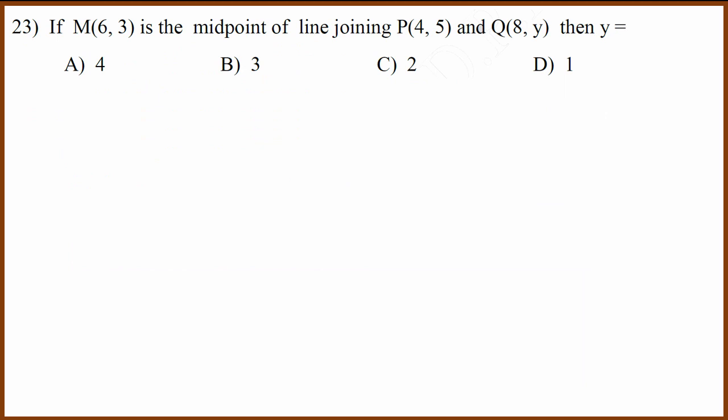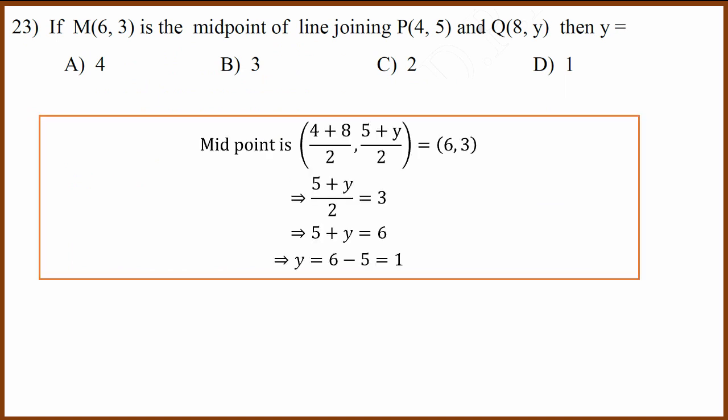23rd question is a midpoint question. Midpoint formula. Midpoint is x1 plus x2 divided by 2, y1 plus y2 divided by 2. So we have to now find the value of y such that this equation holds good. And that will be 5 plus y equals 6. Therefore, y equals 6 minus 5, which is 1. So correct answer is 1.